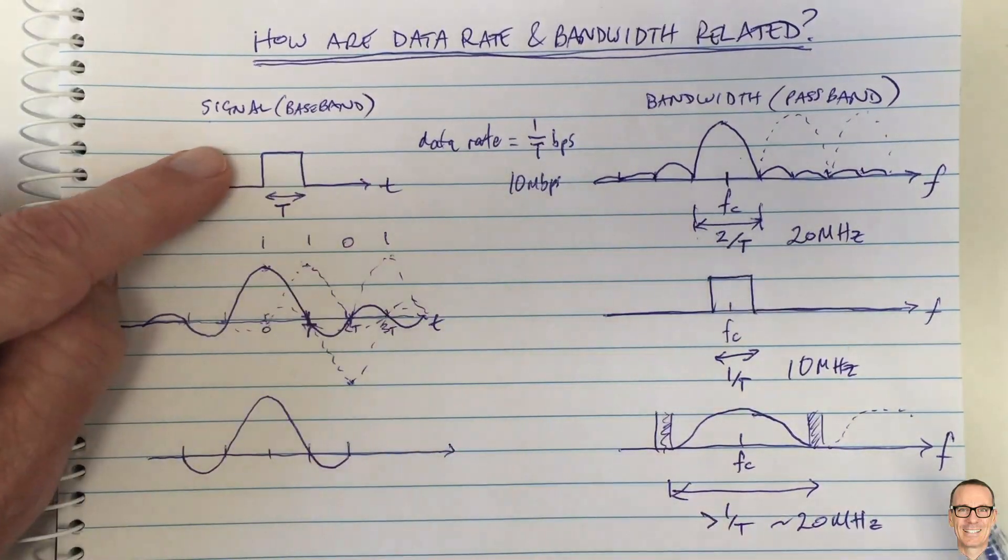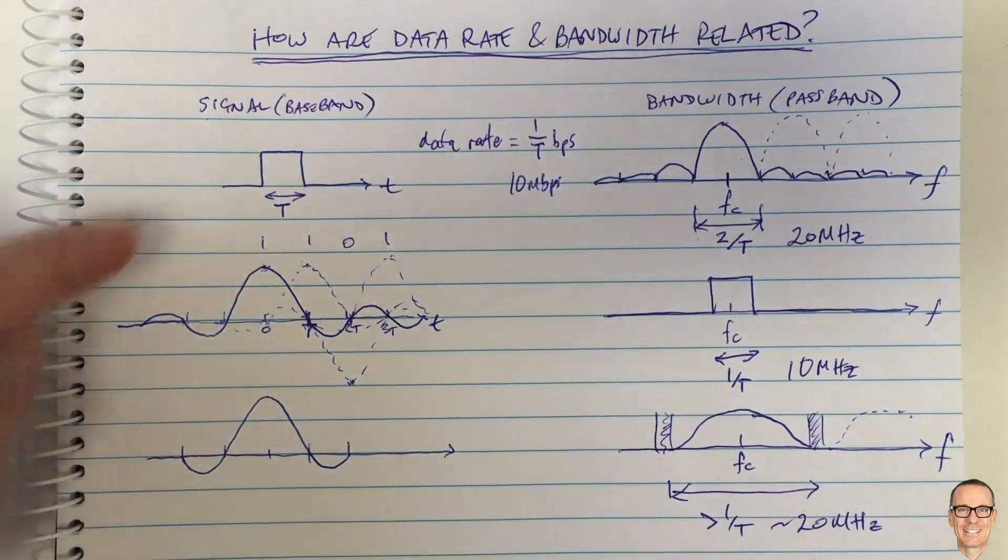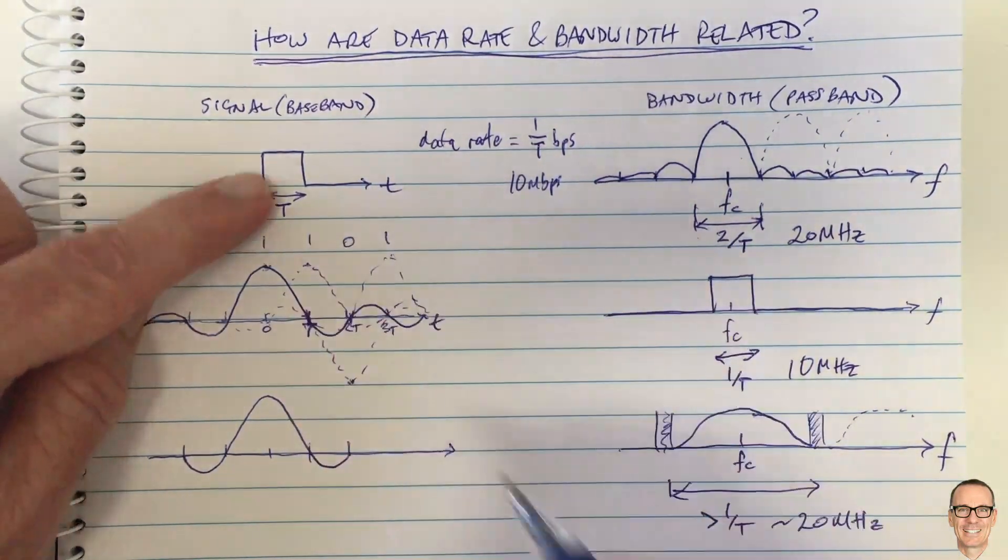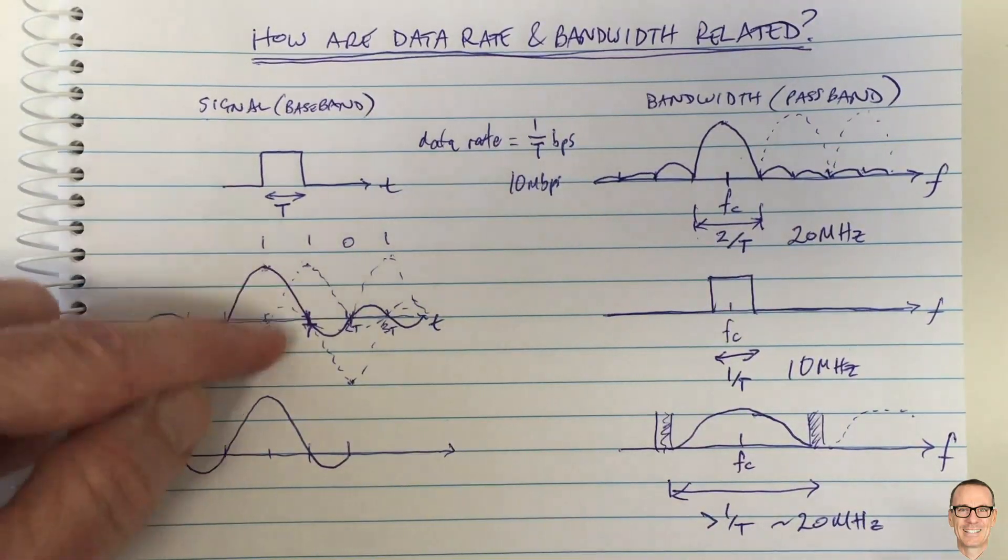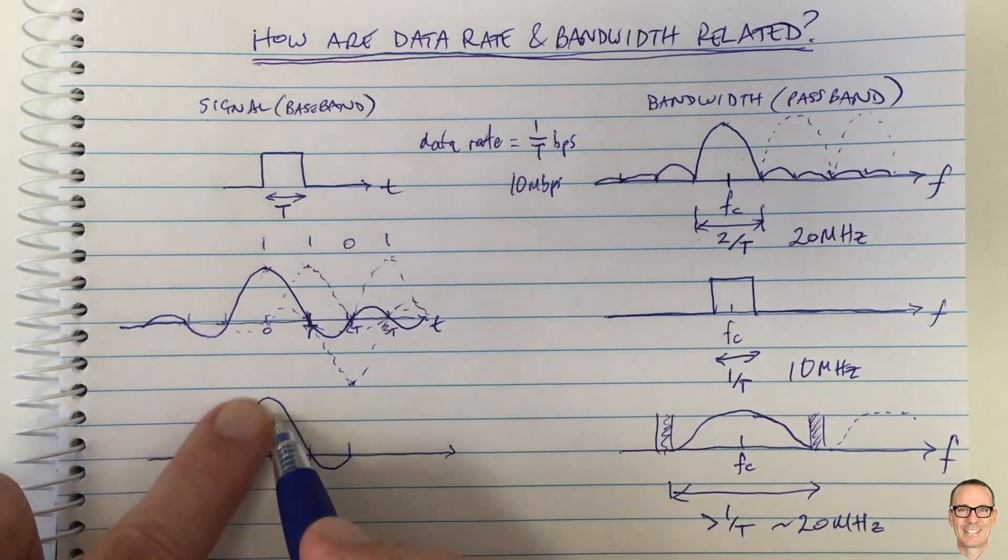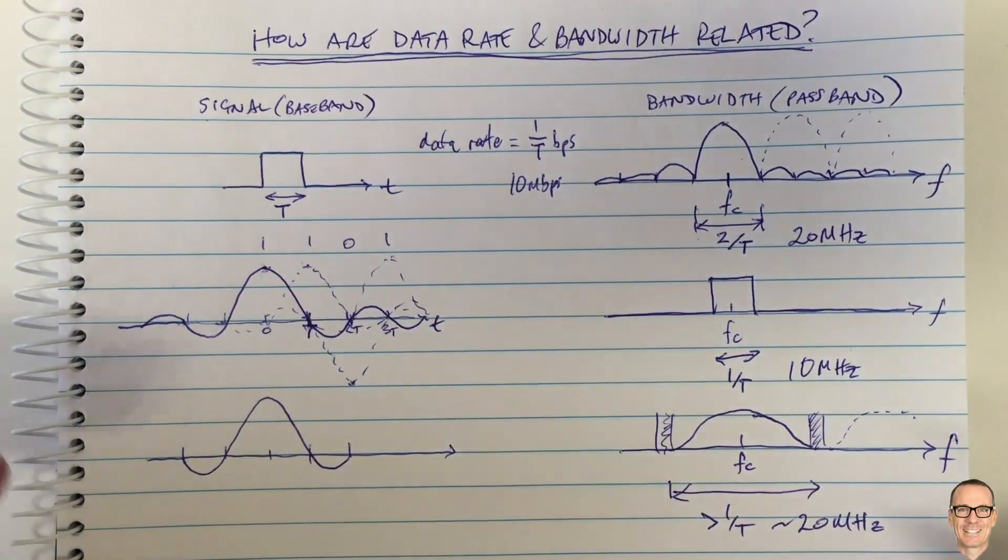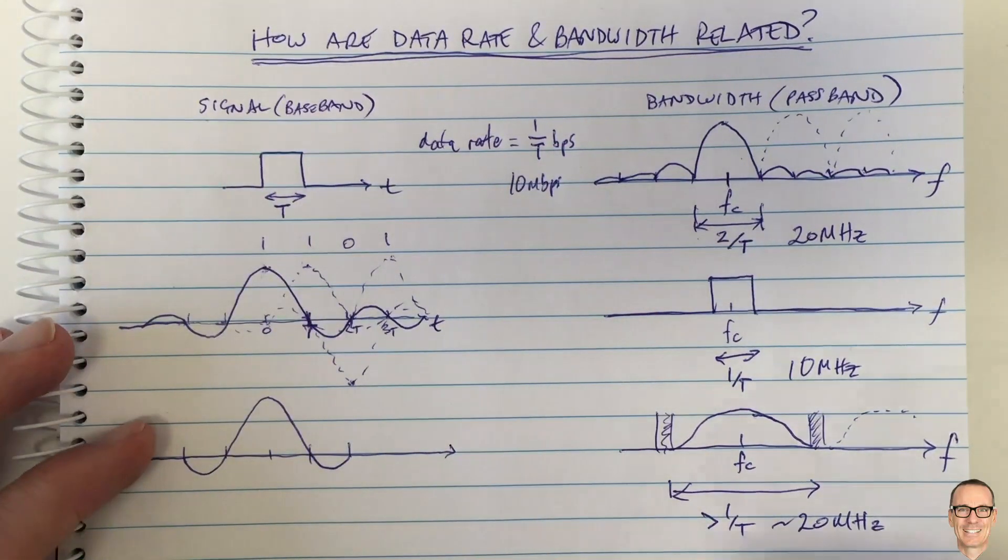Of course I've only talked about binary here. Another thing that can happen is you could have instead of signals that are just two levels, or even this here is also going essentially between two levels, it's either the minus one or the positive one the way we drew it here, you could have signals with different amplitudes to represent different levels.